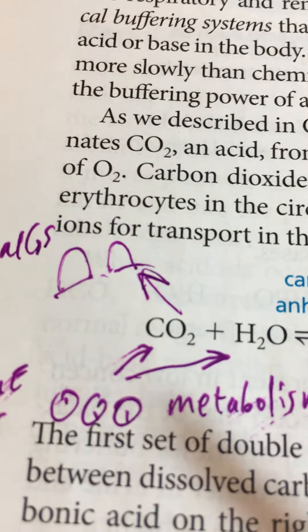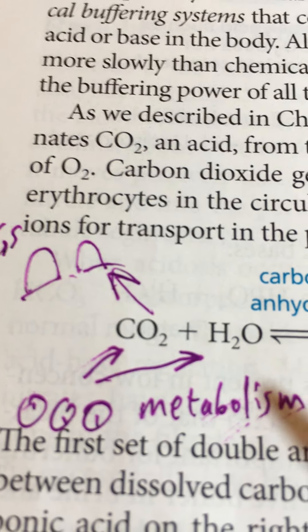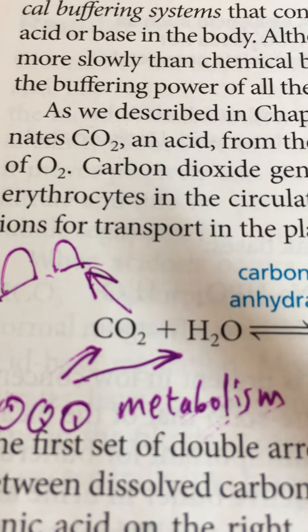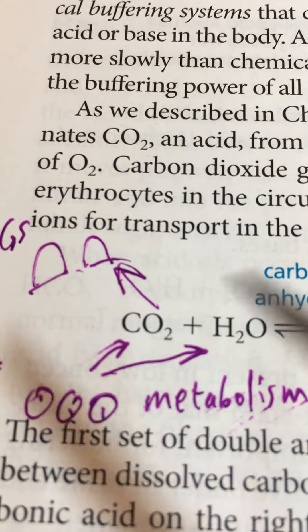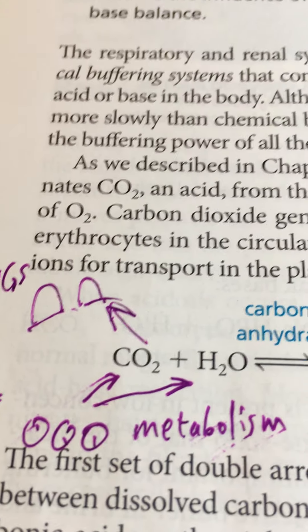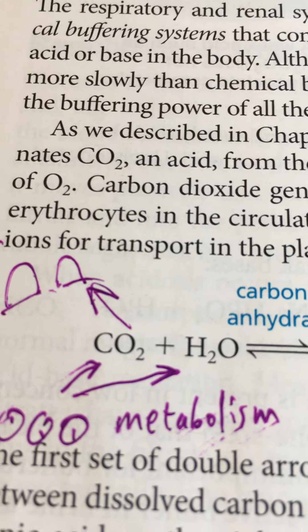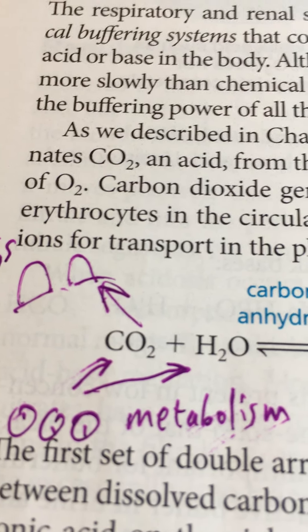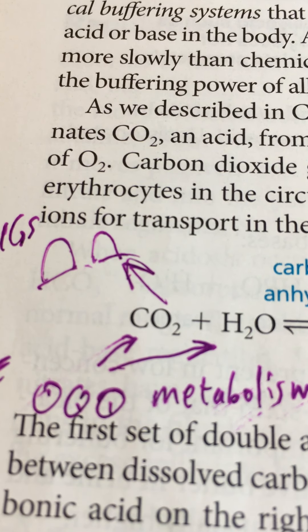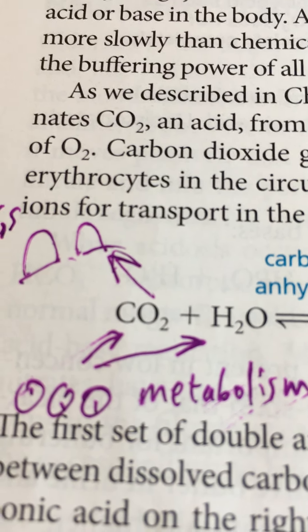Recall that we always retain 40 mmHg of CO2 even in arterial blood, which means we're always retaining a certain amount of bicarbonate throughout the system, and we only build up to 45 mmHg in the venous system — so it's only a slight change.